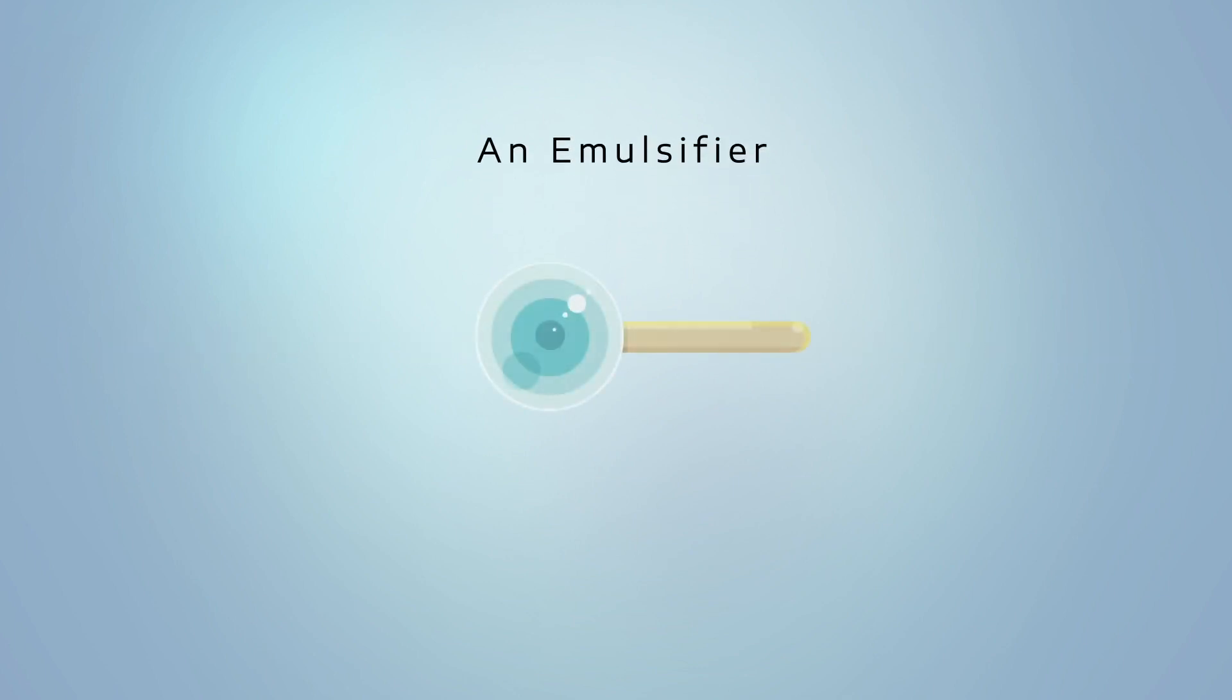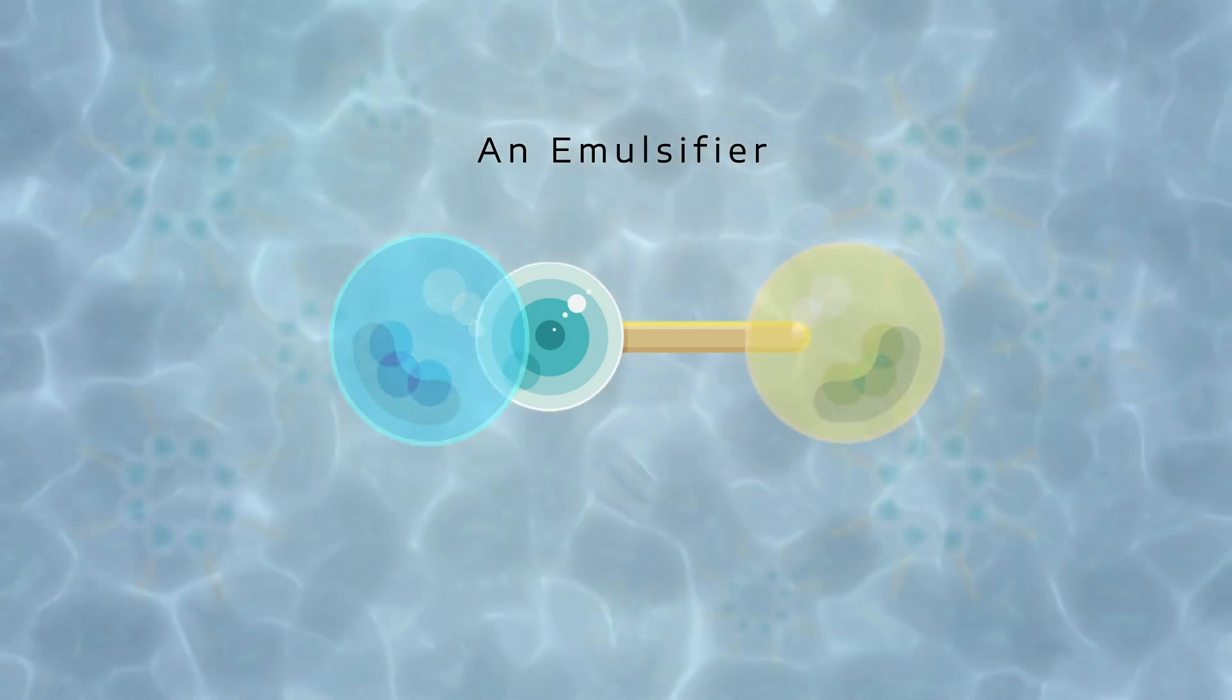An emulsifier has a hydrophilic, water-liking end and a lipophilic, oil-liking end. The hydrophilic end is attracted to the aqueous phase and the lipophilic end to the oil phase, and this binds them together.